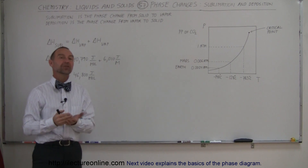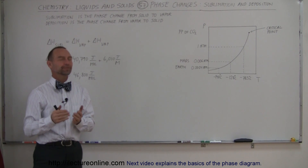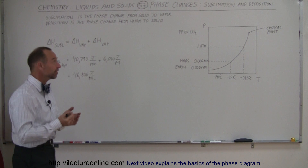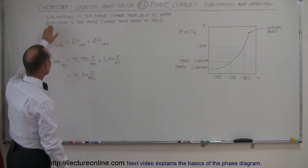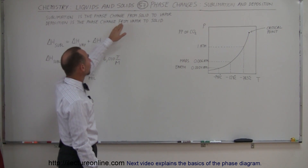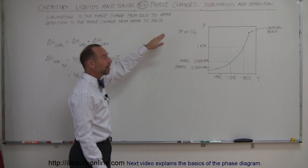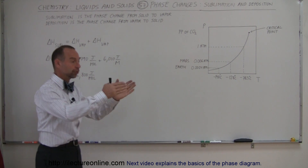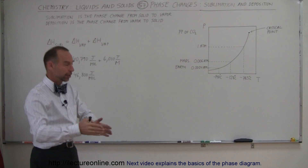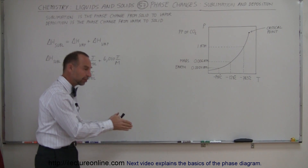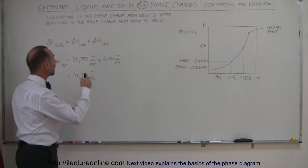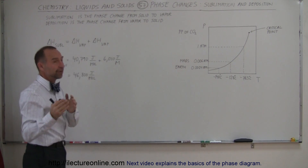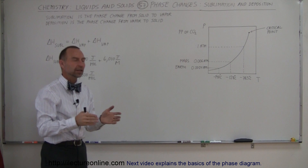Here we're going to talk about sublimation and deposition. Simply said, sublimation is the phase change from solid to vapor — so a solid goes directly from solid to vapor, instead of going from solid first to liquid and then to vapor. And the opposite, deposition, is the phase change from vapor back to solid.